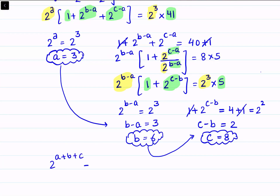Now we have to find 2 raised to power a+b+c. Putting in the values: 2^(3+6+8) equals 2^17, which equals 131072. That's our answer.